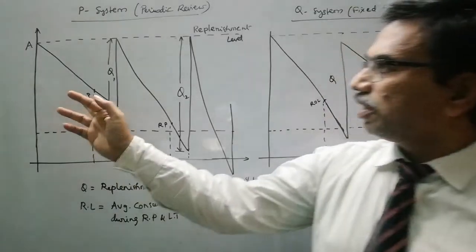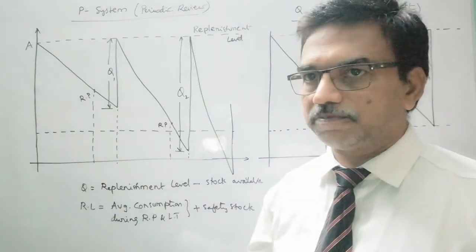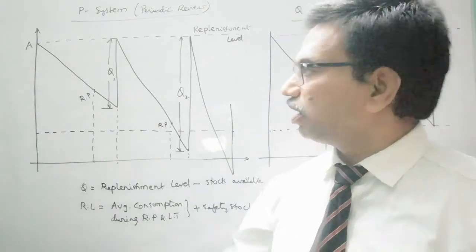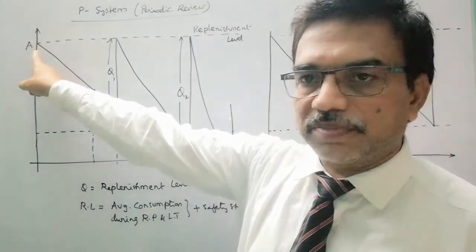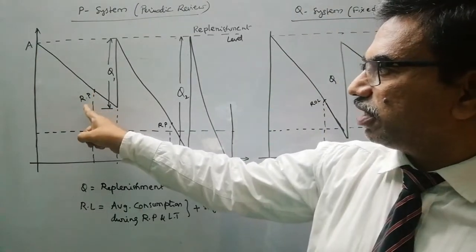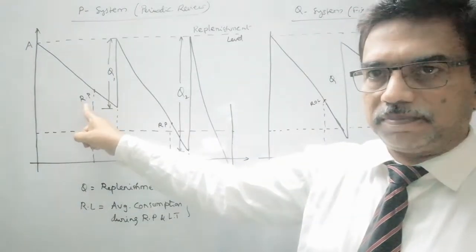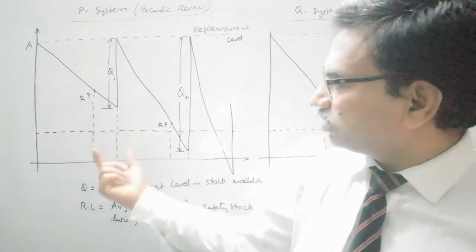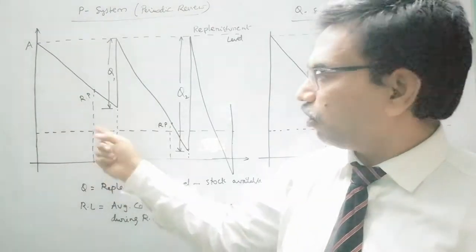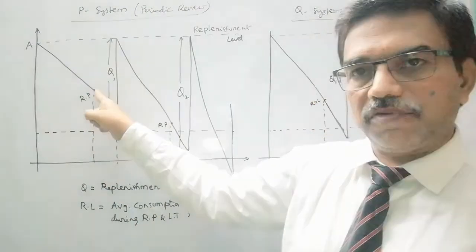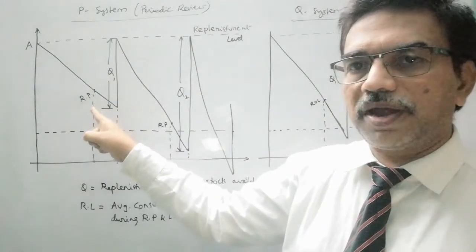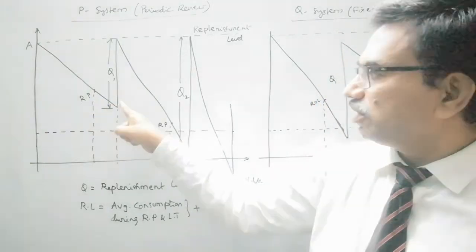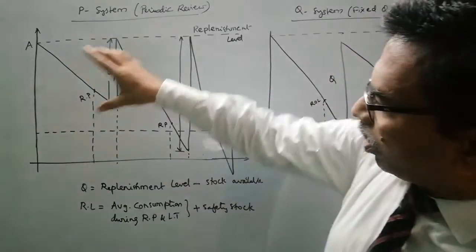For example, if you look at the inventory depletion for a particular item — this is the replenishment level, this is the maximum level of inventory for that particular commodity. Suppose we start at point A, which is the maximum level of inventory. This is the review time, the point at which the review of this item is made, and this is the lead time. At this point a review is made on the available quantity of this particular commodity.